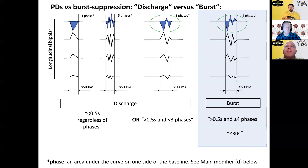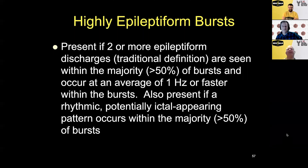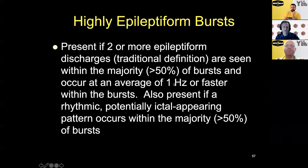A big delta wave lasting a whole second, or even a biphasic one, is still just a discharge. The definition of highly epileptiform bursts means you have two or more epileptiform discharges in the majority of bursts. If you have long bursts, these discharges have to be at one hertz or faster within the bursts.